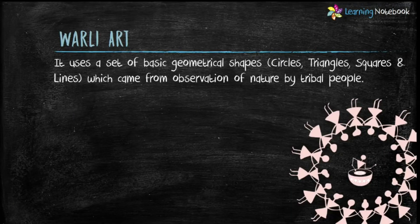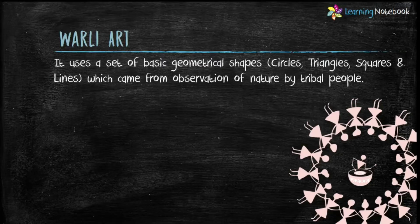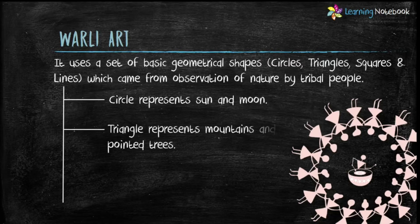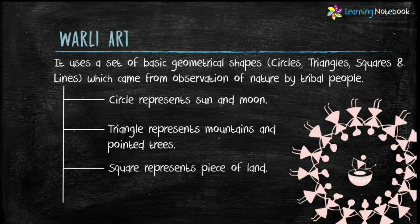Also, Warli art uses a set of basic geometrical shapes like circles, triangles, squares, and lines which came from observation of nature by tribal people. Like circle in Warli art represents sun and moon, triangle represents mountains and pointed trees, and square represents a piece of land. So students, now let's make this magical Warli art by using basic geometrical shapes.